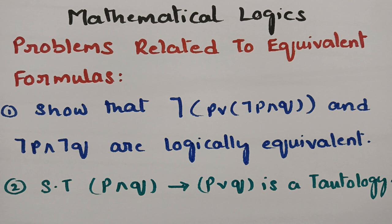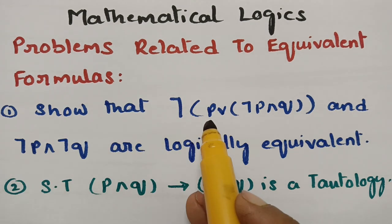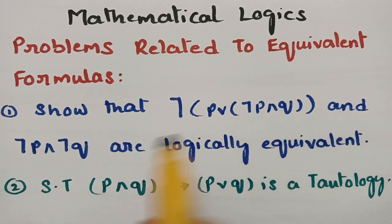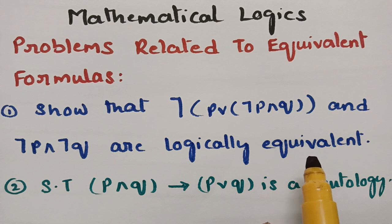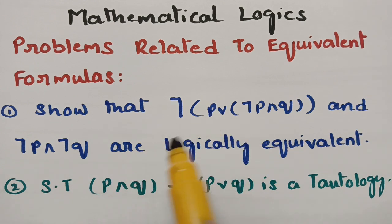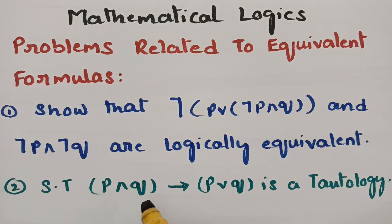These are the two problems which I have taken from the previous question paper. If you follow this video till the end, you will be very much benefited and get a good score. The first question is: we have to show that negation of (P or (negation P and Q)) and negation P and negation Q are logically equivalent. We have to show this without using truth value tables, using the equivalent formulas.